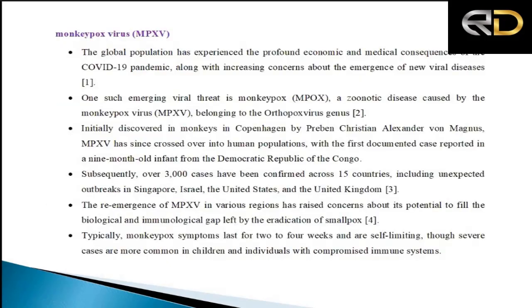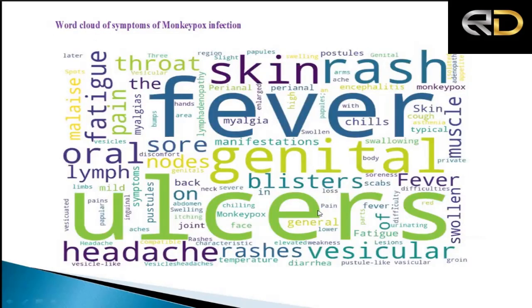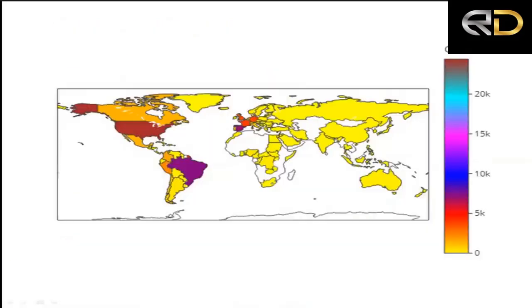These are the features and specifications about the monkeypox virus. Due to time constraints, we will not go into full detail, but here are some key points regarding the monkeypox virus and its incidences across the globe. This word cloud map shows the symptoms of monkeypox virus — fever and ulcers are the most common, followed by genital symptoms, skin rashes, and many others.